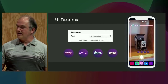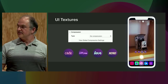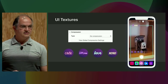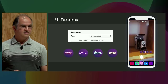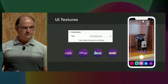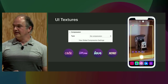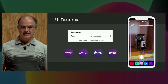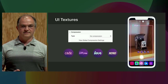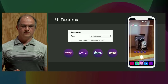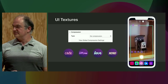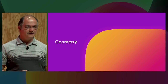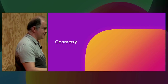One thing to keep in mind is that UI textures should not be GPU compressed, because that part of rendering doesn't go through the GPU rendering pipeline. And even if it did, many UI elements like text are prone to artifacts with GPU compressed formats. And now Annalisa is going to talk about optimizing geometry.